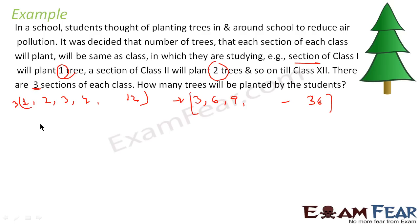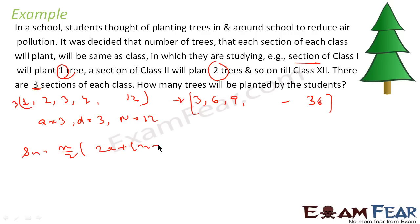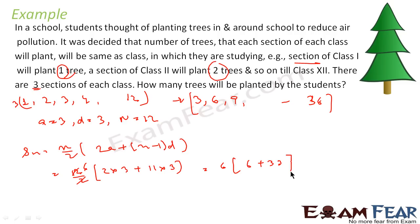This is an AP with A=3, D=3, and N=12. Using S_n = N/2 × (2A + (N−1)D), we get S_12 = 12/2 × (2×3 + 11×3) = 6 × (6 + 33) = 6 × 39 = 234. So the total number of trees planted is 234.